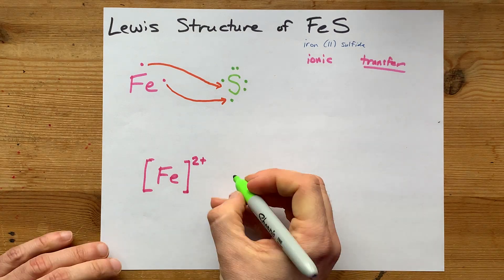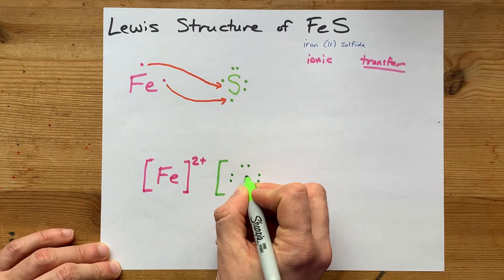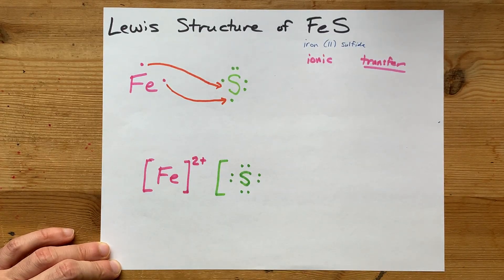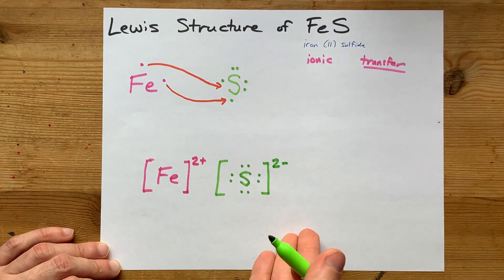And the sulfur, you're going to have to show with all eight electrons around it. That's six that it brought plus two that it stole from iron with a charge of minus two or two minus.